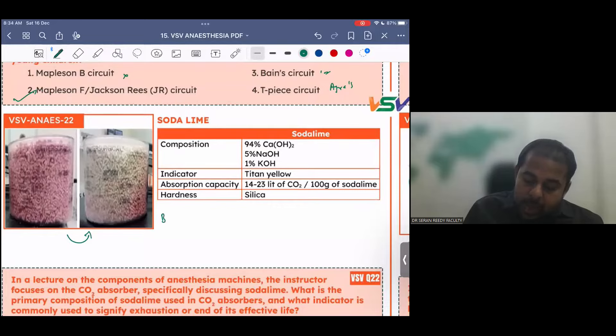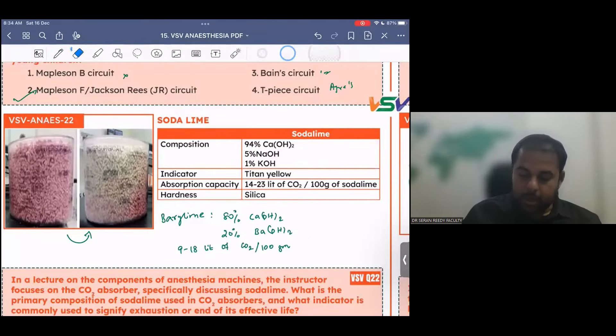There is another thing called barium lime. This barium lime, though the name is barium lime, again, still the major constituent, 80% is calcium hydroxide, and 20% is barium hydroxide, and it absorbs 9 to 18 liters of carbon dioxide per 100 grams of barium lime.